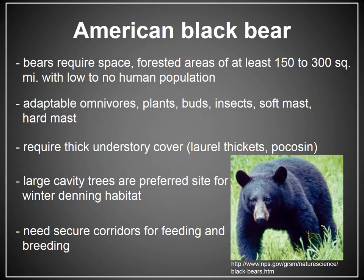Whereas the white-tailed deer is really tolerant of frequent human interaction, black bears are not. In North Carolina, black bears are most abundant in the coastal plain and in the Appalachian mountains where they are relatively free from human interference. They require large areas of forest land with a variety of food and cover sources. Large cavity trees, most abundant in older patches of forest land, are their preferred denning sites. Bears do well where there are a variety of successional stages of forest land present, but the quality of their habitat goes down as pressures from residential development and road construction increase.